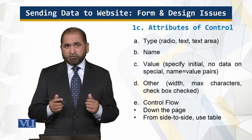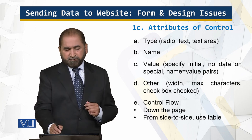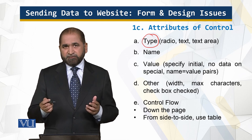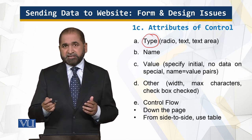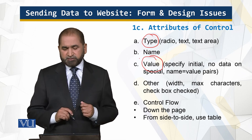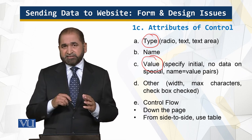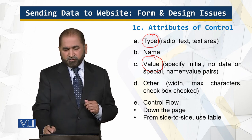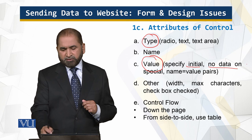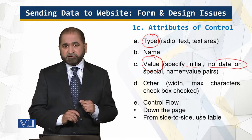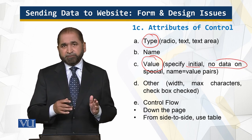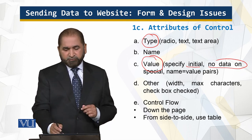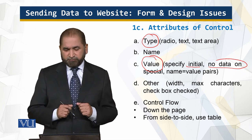The attributes of controls include the type, which specifies whether it's a radio button, text, or text area. Then there is the name and the value of the control. You can set a default value for the control, or you cannot — for example, no data initially or no data on specialized controls. It is a name-value pair which is being sent to the server, or you may leave the value altogether, depending on the type of style you're using.